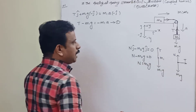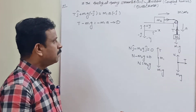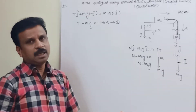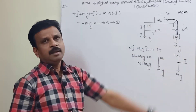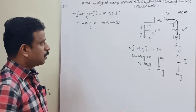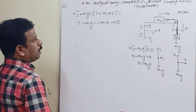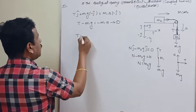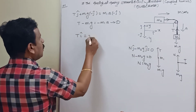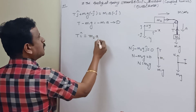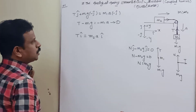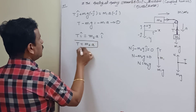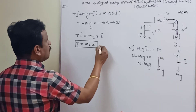Taking the modulus, N minus m2·g equals zero, which means N equals m2·g. So the normal force given by the table is balanced by the force due to gravity, and the net vertical motion is zero — there is no acceleration in the vertical direction. For block m2 along the x-axis: T·(i-cap) equals m2·a·(i-cap), so taking modulus, tension T equals m2·a. This is Equation 2.